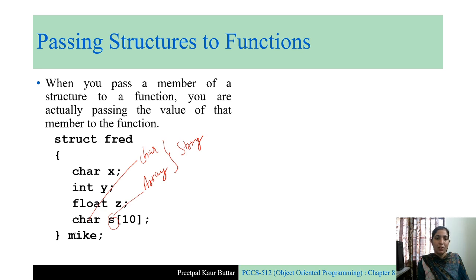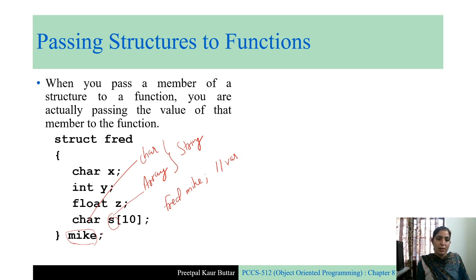One new thing to note here is that we are writing the variable name directly in the structure definition. Normally in previous programs we wrote `fred` then `mike` to create structure variables. But you can also write the variable name before the semicolon, after the closing curly brace. This also creates the variable `mike` of type `fred`. Both syntaxes are equivalent.